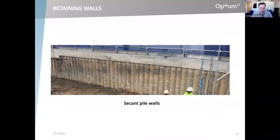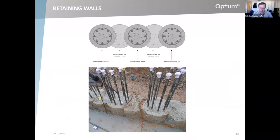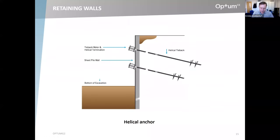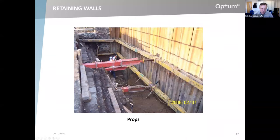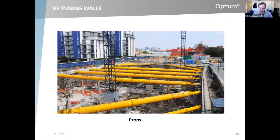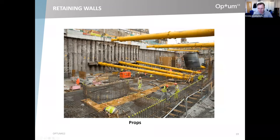Secant pile walls are created by drilling primary piles and then driving secondary piles. There are also various types of support systems: helical anchors, grouted anchors, and props with some sort of hydraulic system to adjust and push the wall back into the soil if it moves too far. These can be put in at several levels. It's a wide variety of scenarios that can all be modeled in Optum G2.